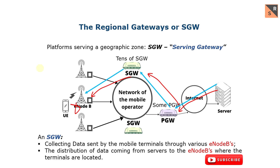The Serving Gateway and the Packet Gateway are two very important elements of the core of the 4G network. The packets that make up the data stream — for example, the video stream I look at on my smartphone — pass through the P-Gateway, which is the entrance, and the Serving Gateway, which is linked to the region where I'm located.